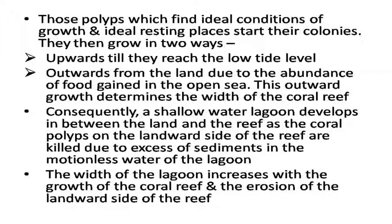They grow in two ways: upwards till they reach the low tide level, and outwards from the land due to the abundance of food gained in the open sea. This outward growth determines the width of the coral reef. Consequently, a shallow water lagoon develops between the land and the reef, as the coral polyps on the landward side of the reef are killed due to excess sediments in the motionless water of the lagoon. The width of the lagoon increases with the growth of the coral reef and the erosion of the landward side of the reef.